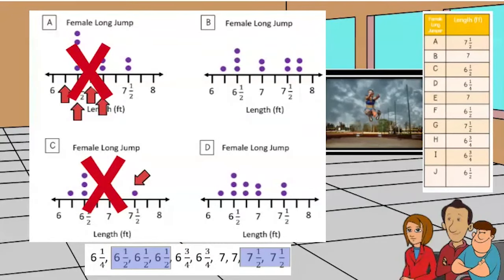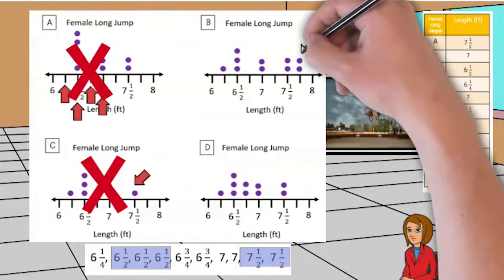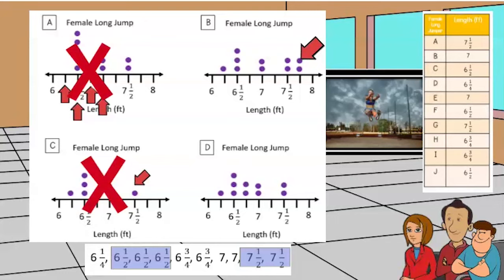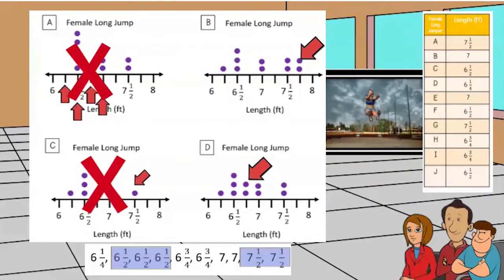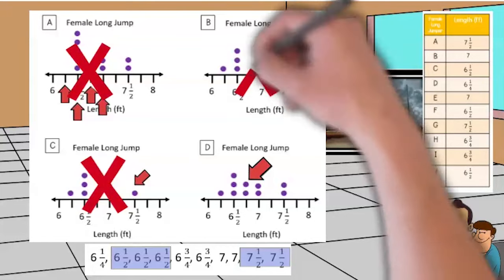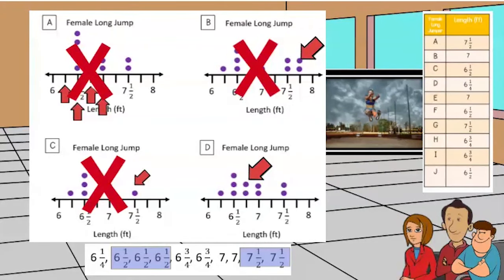I notice a difference between dot chart B and D. B has two data points over seven and three fourths. D has two points over six and three fourths. B can't be right because the chart doesn't have any measurements of seven and three fourths. D is the answer.